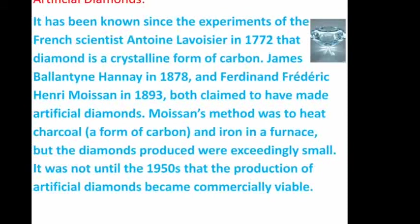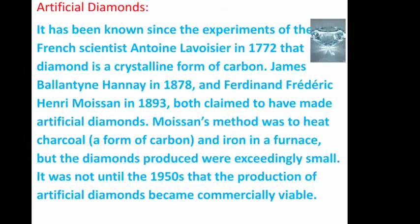The ending of the story leaves a pause, inviting us to imagine what must have happened to the diamond maker. As background, it has been known since the experiments of French scientist Antoine Lavoisier in 1772 that diamond is a crystalline form of carbon. James Ballantyne Hannay in 1878 and Ferdinand Frédéric Henri Moissan in 1893 both claimed to have made artificial diamonds. Moissan's method was to heat charcoal — also a form of carbon — with iron in a furnace, but the diamonds produced were exceedingly small. It was not until the 1950s that the production of artificial diamonds became commercially viable.